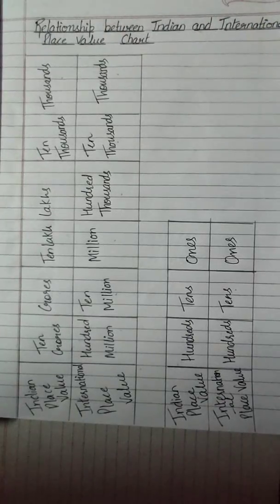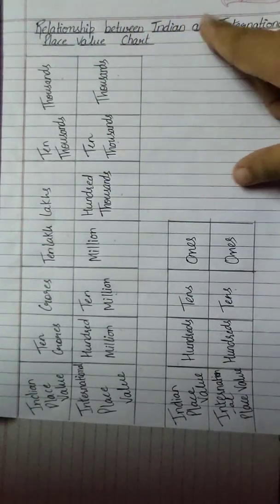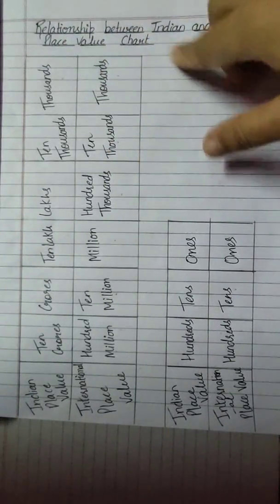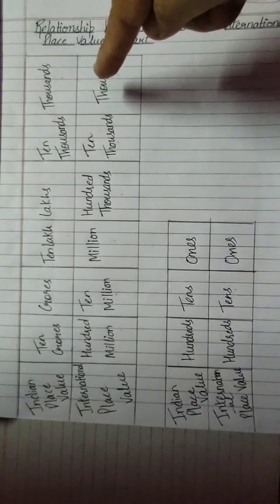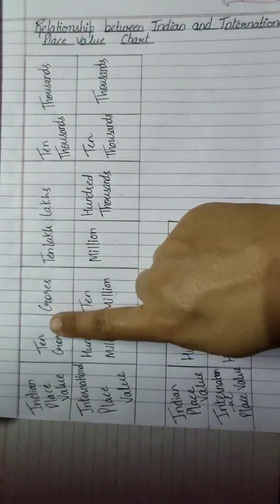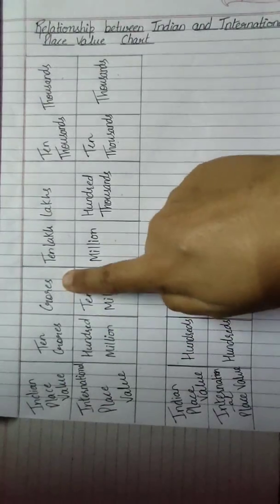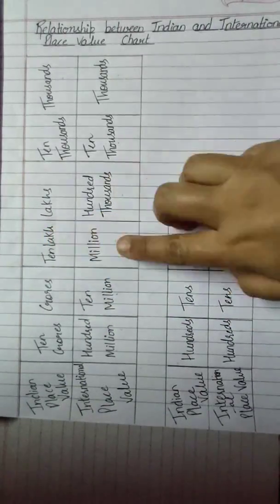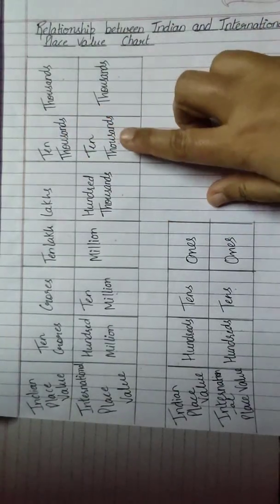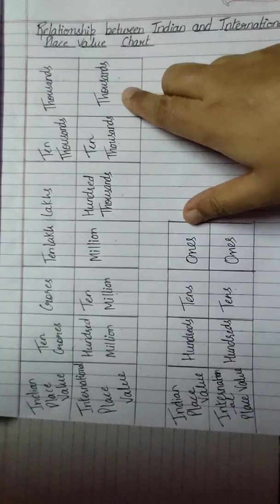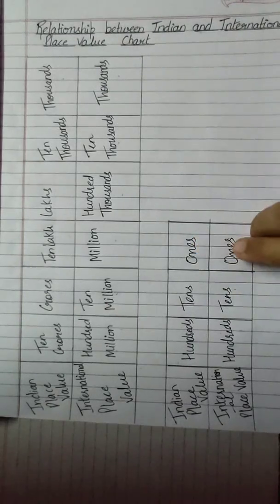I hope you understood. Now we are going to study the relationship between the Indian and international place value charts. If you compare both the charts, you will observe that 10 crores is the same as 100 million, 1 crore is the same as 10 million, 10 lakh is the same as 1 million, 1 lakh is the same as hundred thousand, 10 thousands is the same as 10 thousands, thousands is the same as thousands, hundreds is the same as hundreds, tens is the same as tens and ones is the same as ones.